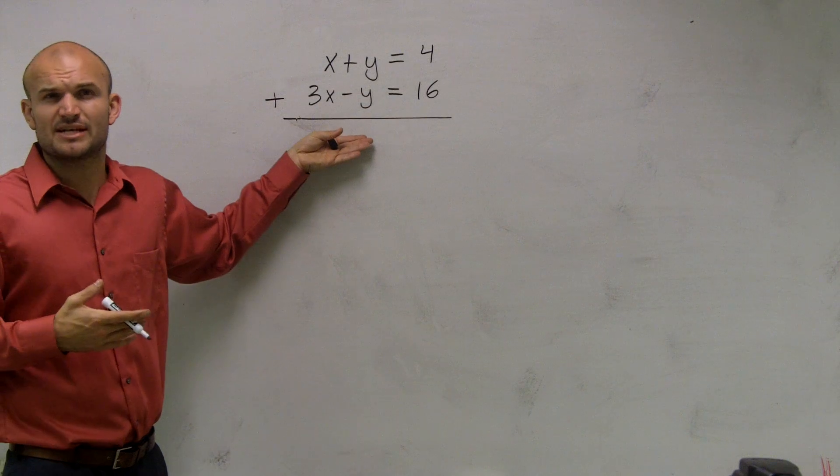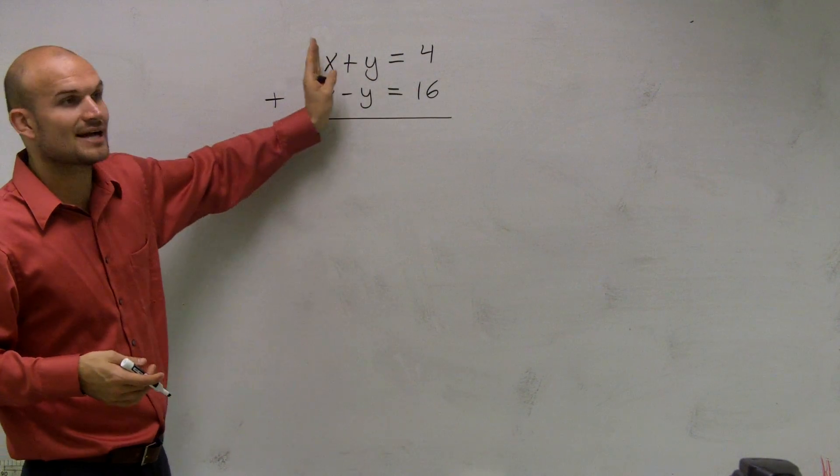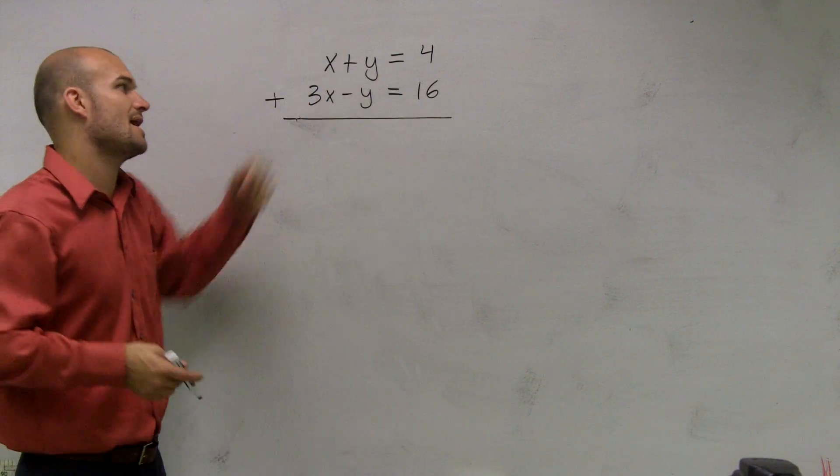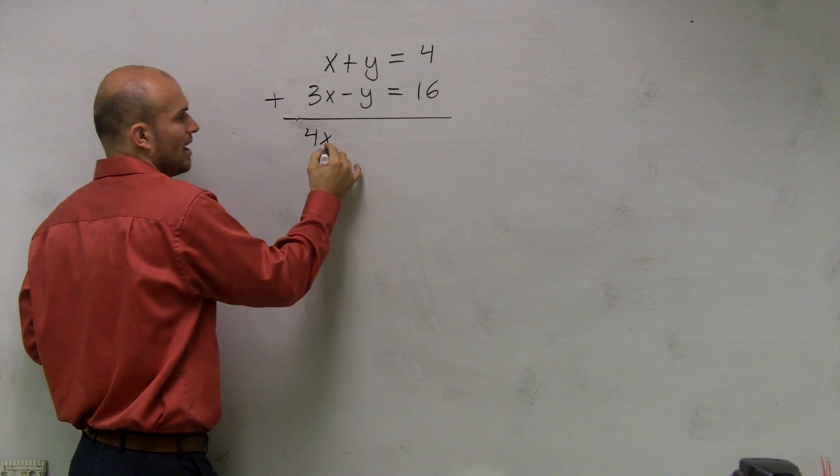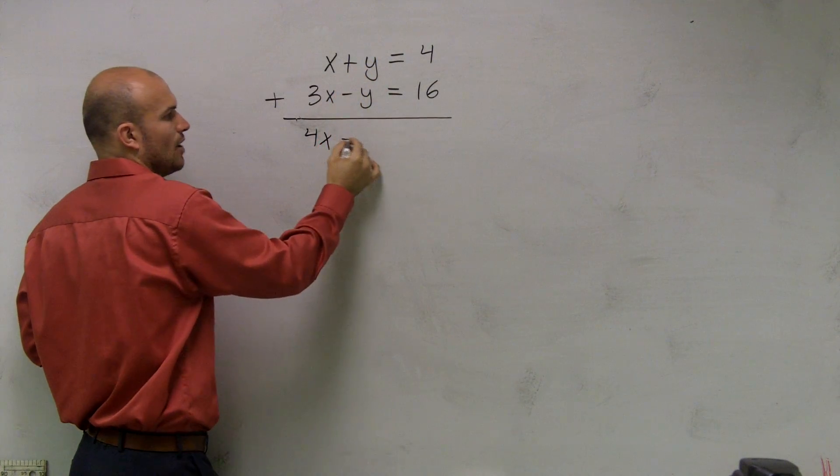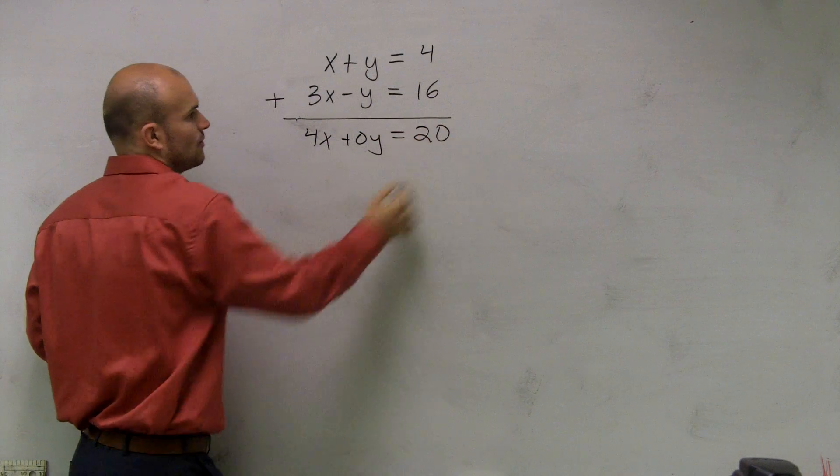So what do I mean by elimination by addition? All I want you to do is take your two equations and add them up. Make sure your x's and your y's are perfectly aligned, and then add the two equations. So x plus 3x is 4x, y plus a negative y is 0y, 4 plus 16 is 20.